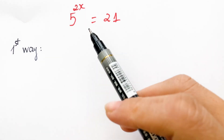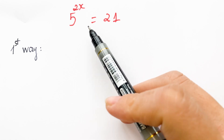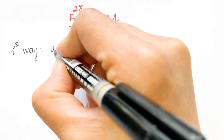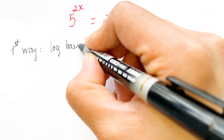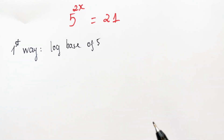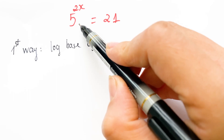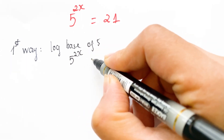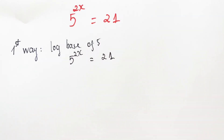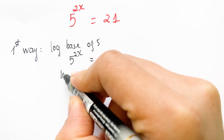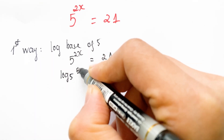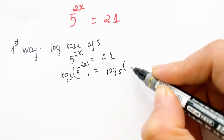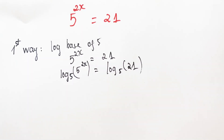For the first way, you can take the logarithms of both sides of the equation. In this case, you take the logarithm base 5. So we have log base 5 of 5 to the power 2x is equal to log base 5 of 21.